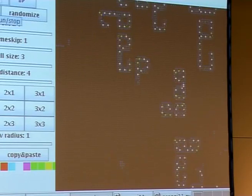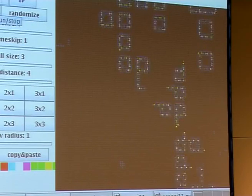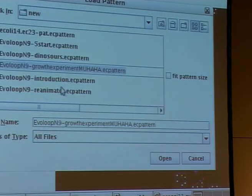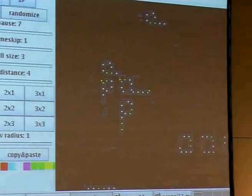So as you can see, this cellular automator, it shows evolutionary effects, although it's really only local rules and local interaction. But it has really some interesting phenomena.